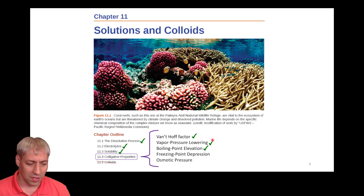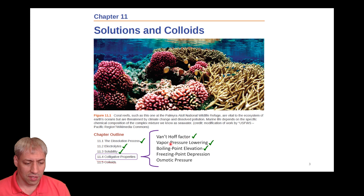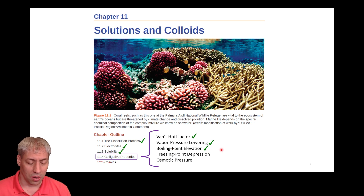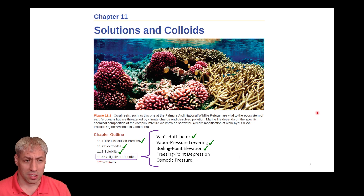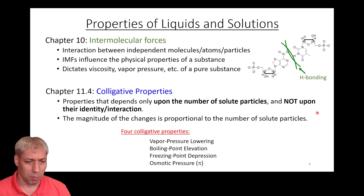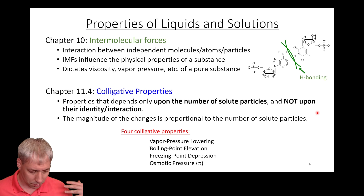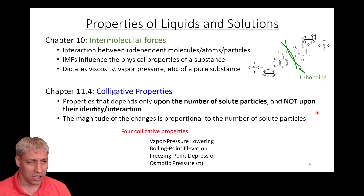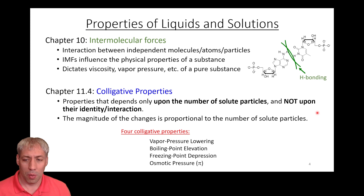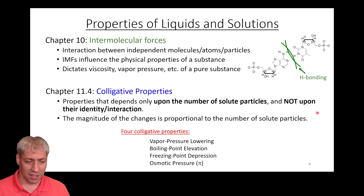Previously we went through the van't Hoff factor, vapor pressure lowering, and boiling point elevation. In this video we're going to look at freezing point depression as well as osmotic pressure. Just to remind you, I spent a lot of time talking about intermolecular forces in chapter 10, as well as the first part of chapter 11, where those intermolecular forces dictate properties like viscosity and vapor pressure.